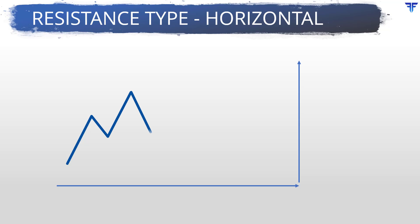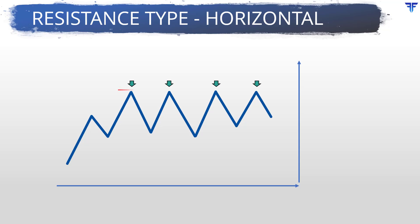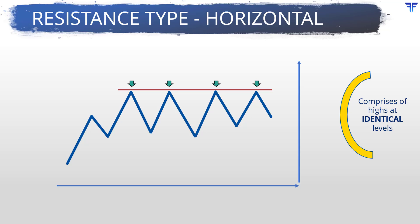Let us start with the horizontal resistance first. Have a look at this chart here. Notice that each high is more or less at the same level as its preceding high. As a result, if the highs are connected using a line, you will notice the line being horizontal. So, a horizontal resistance occurs when two or more highs are concentrated at identical or near identical levels.